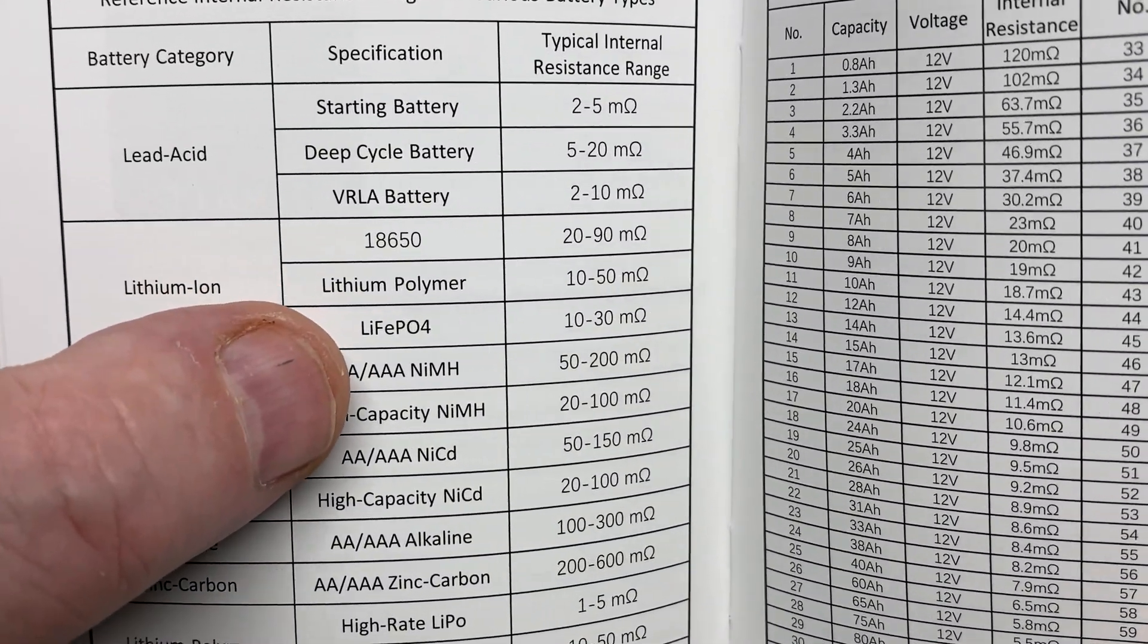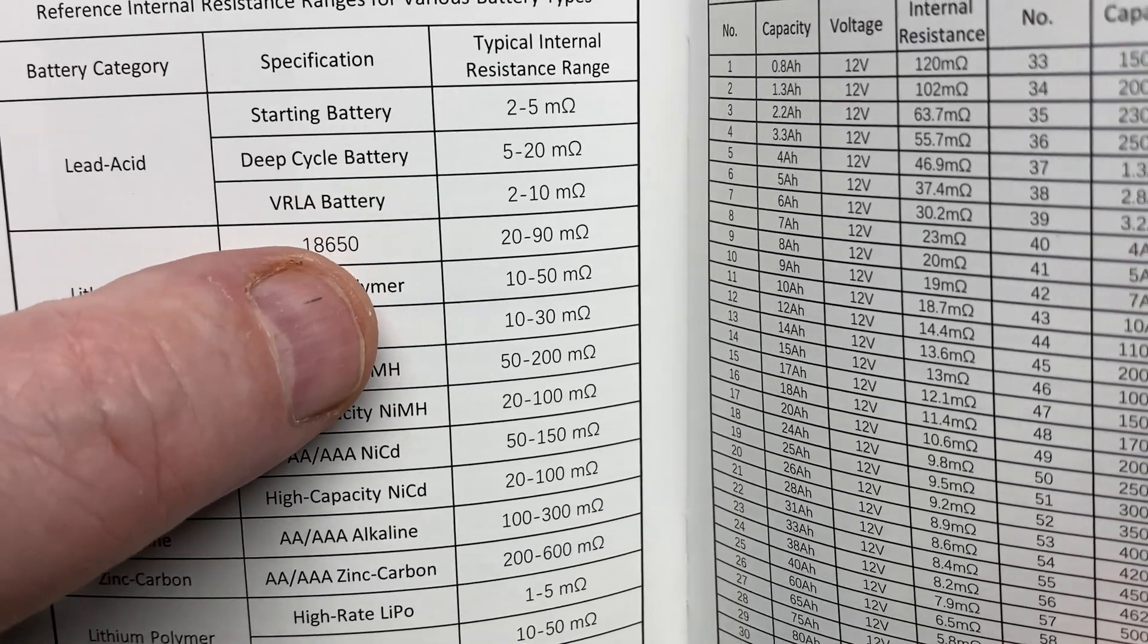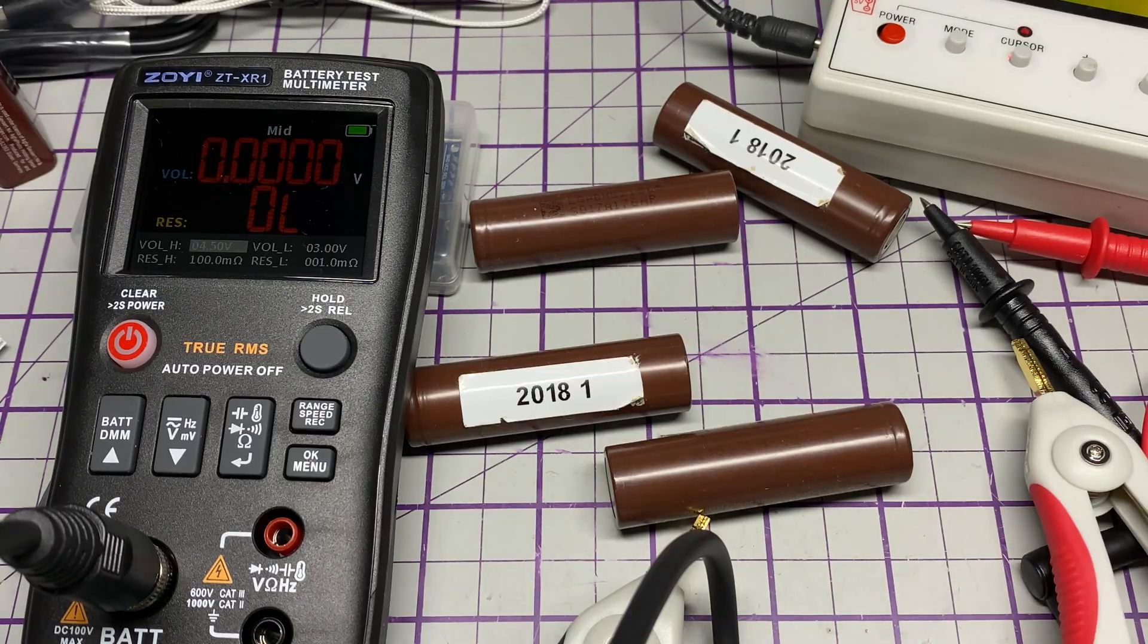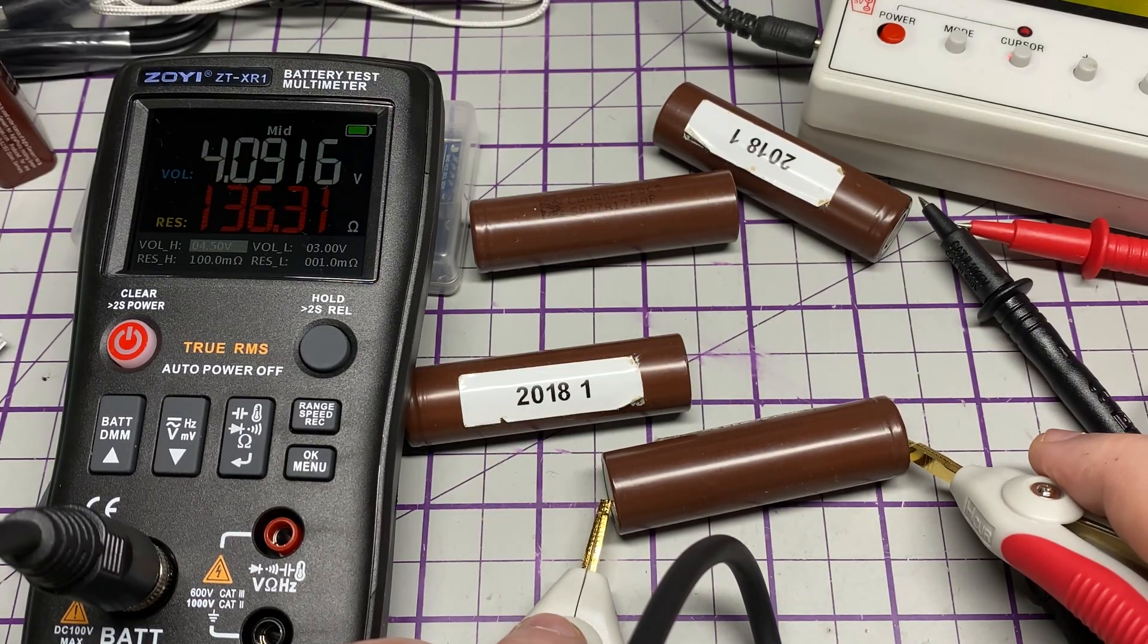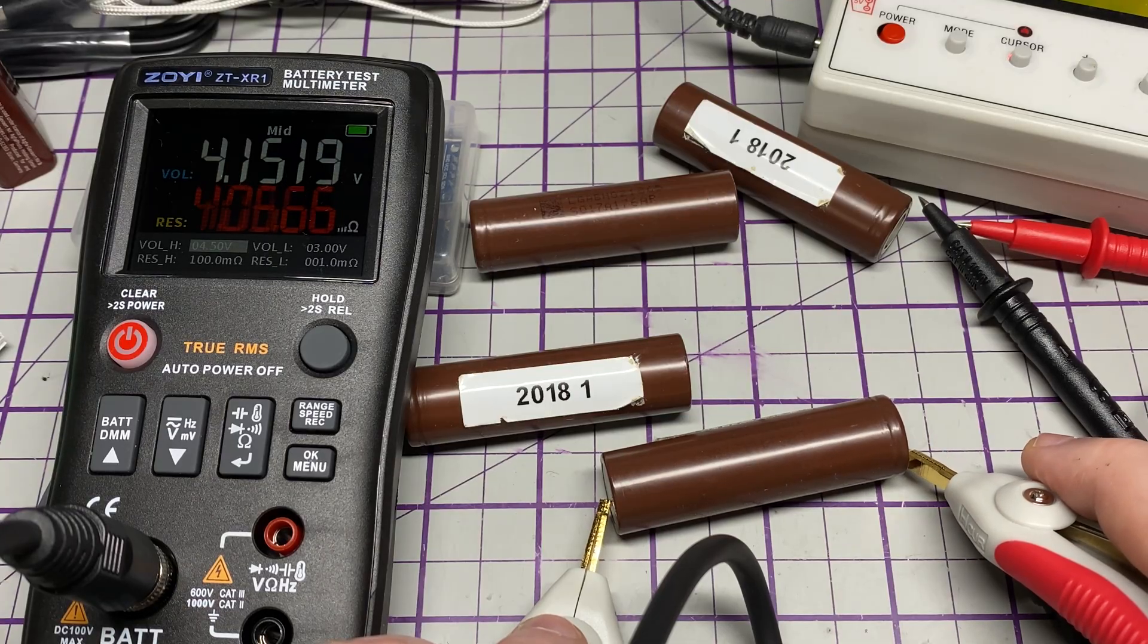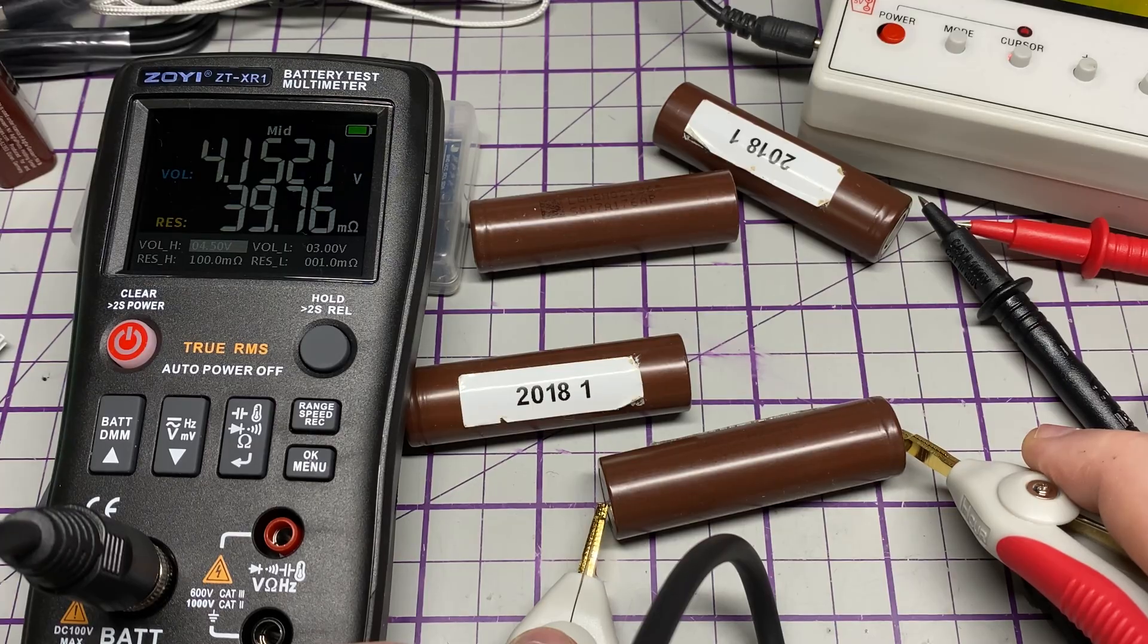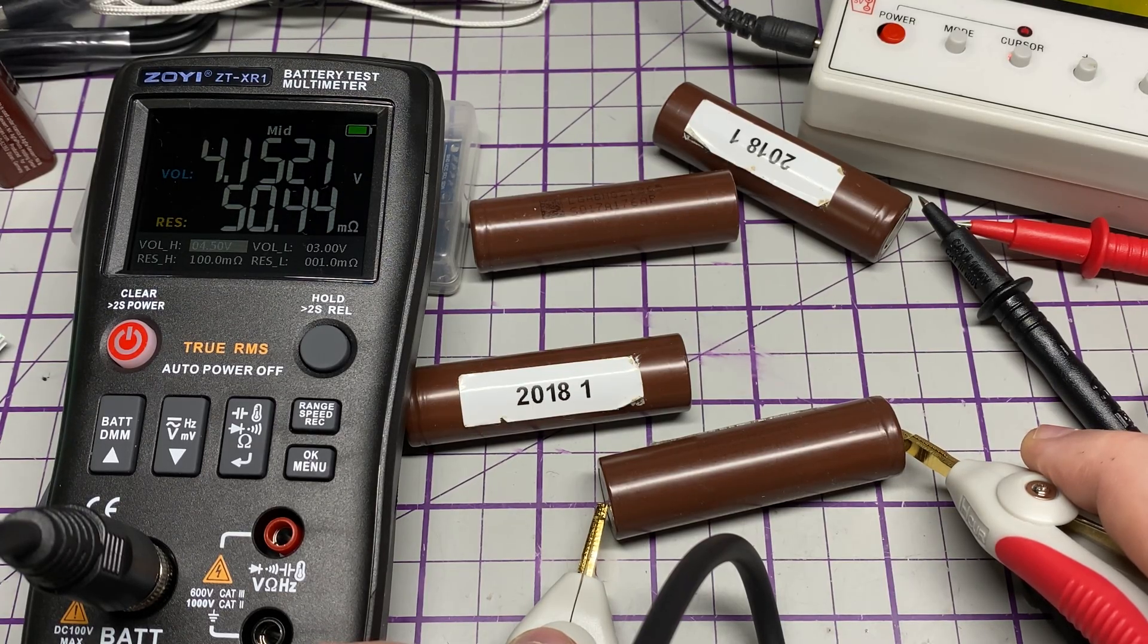Lithium-ion, 20 to 90 milliohm for an 18650. Now these aren't LiPo or LiPol batteries, so it's fine. I'll put the probes back on again, just let it settle. They're bang in the middle of 20 to 90 milliohm.